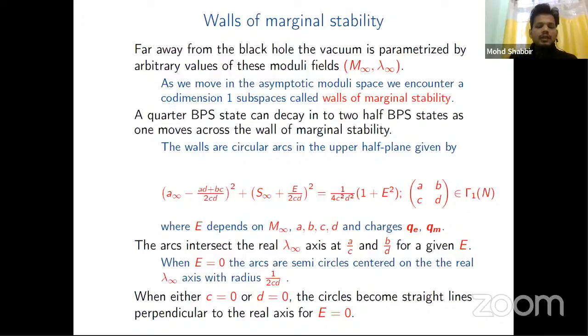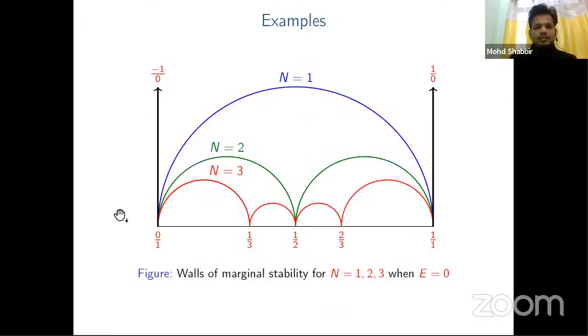The arcs intersect the real λ_∞ axis at a/c and b/d for a given e. When e² = 0, the arcs are semi-circles centered on the real λ_∞ axis with radius 1/(2cd). When either c or d are zero, the circles become straight lines parallel to the real axis. These are some examples for N = 1, 2, and 3. For N greater than 3, there are some infinities of arcs reaching up to limiting points.